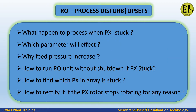What happened to the process when PX is stuck? Which parameters will be affected? Why does feed pressure increase? How to run the RO unit without shutdown if PX is stuck? How to find which PX in the array is stuck? How to rectify it if the PX rotor stops rotating for any reason?